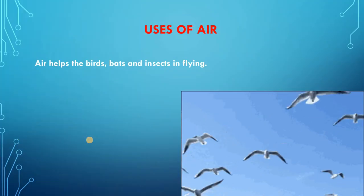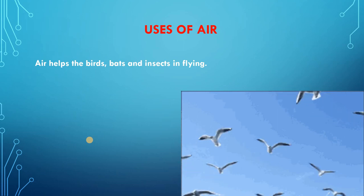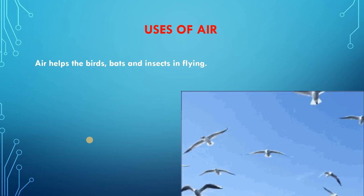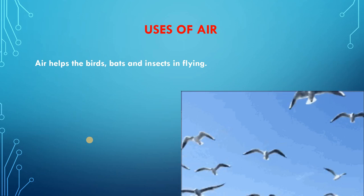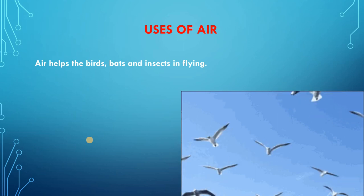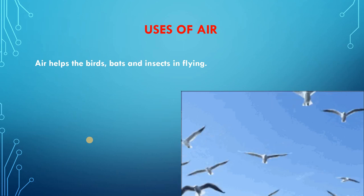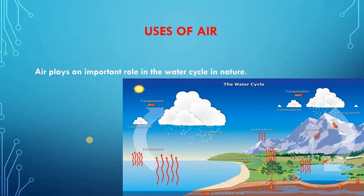Air helps in the movement of birds and insects for the process of flying. In fact, birds, bats and insects can fly only due to the presence of air. The birds, bats and insects fly by pushing the air downwards and backwards with their wings, and that air helps them to move forward, as you have already read in the chapter on body movements. Air plays an important role in the water cycle in nature. Hot air, being lighter, rises up, carries water vapor high up in the sky, and helps in bringing rain.